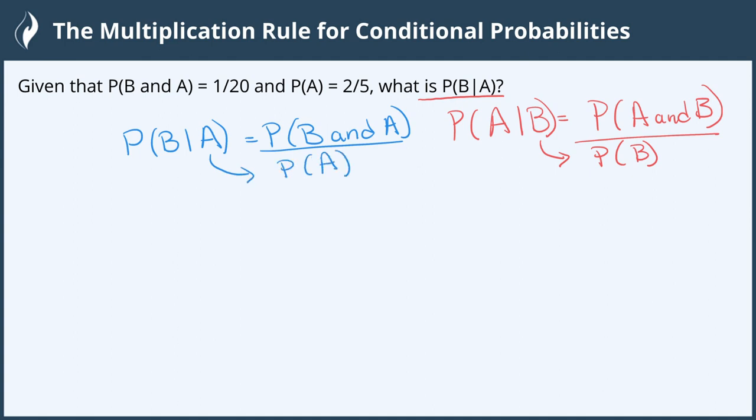Now we were given these: the probability of B and A is 1/20 and the probability of A is 2/5. So this is 1/20 divided by 2/5, giving us a complex fraction.